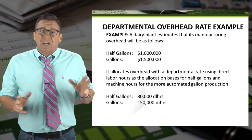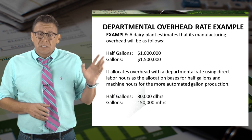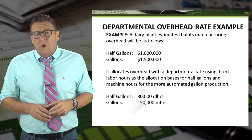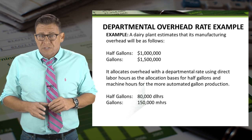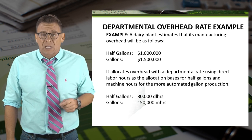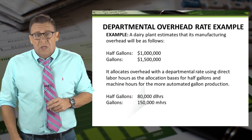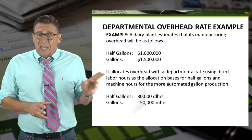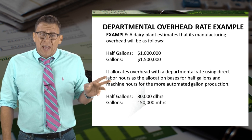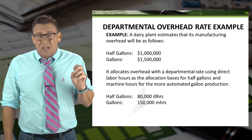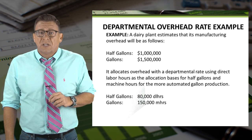Let's look at an example of a dairy plant. A dairy plant estimates its overhead by department and assumes the following: half gallons, one million dollars; gallons, one and a half million dollars. It allocates overhead with departmental rates using direct labor hours as the allocation basis for half gallons and machine hours for the more automated gallon production. Notice that the more refined system can use different allocation bases for different departments. The half gallons are estimated to have 80,000 direct labor hours and the gallons are estimated to have 150,000 machine hours.